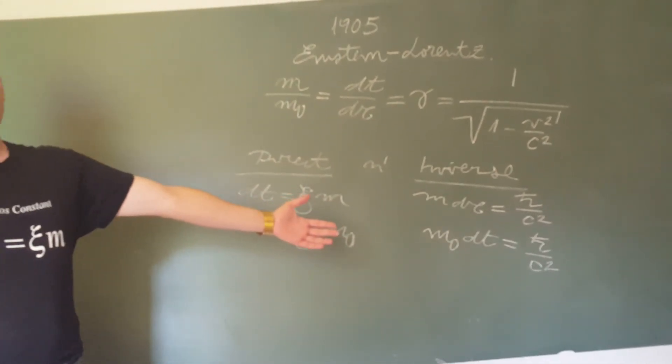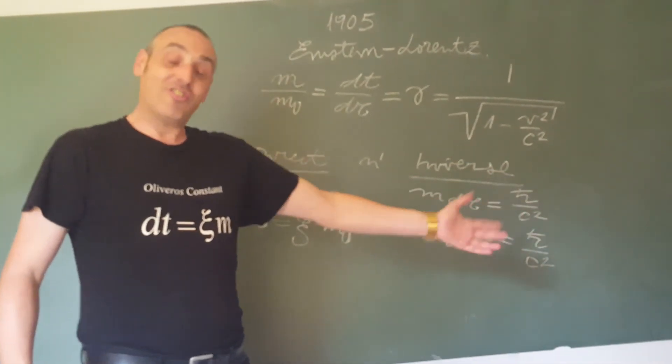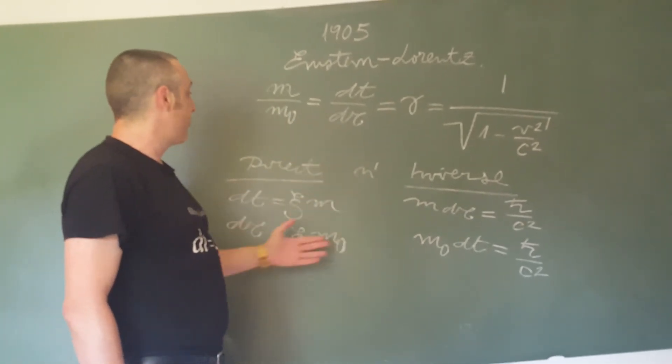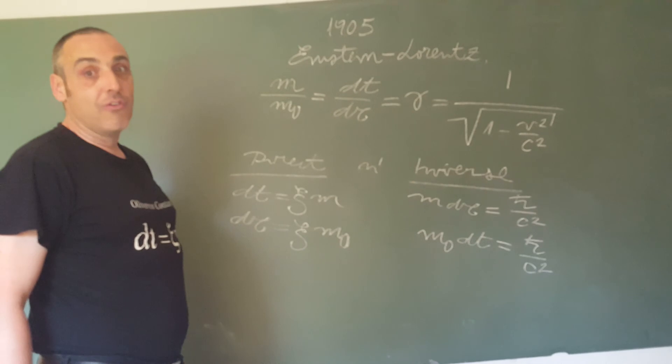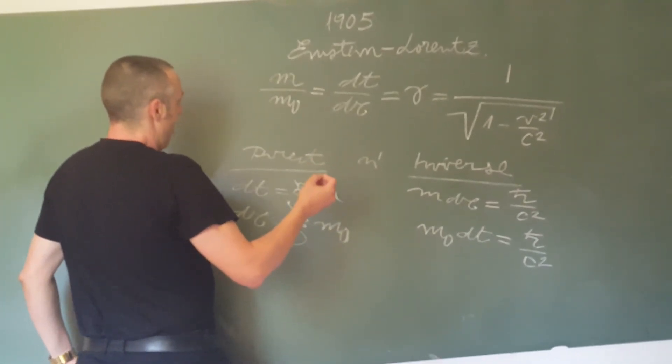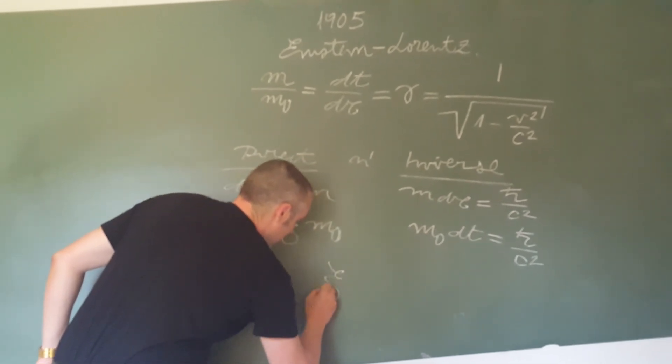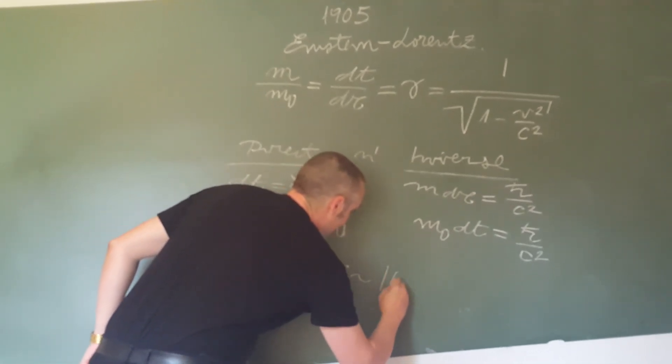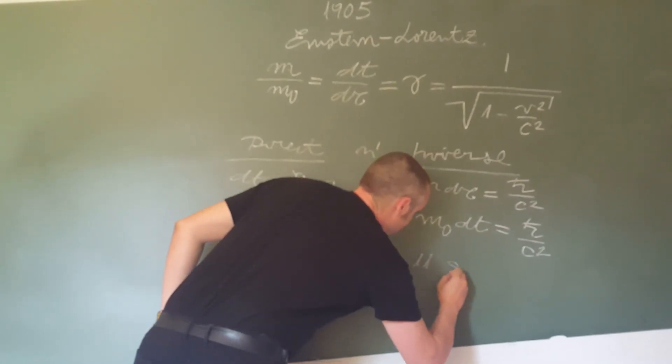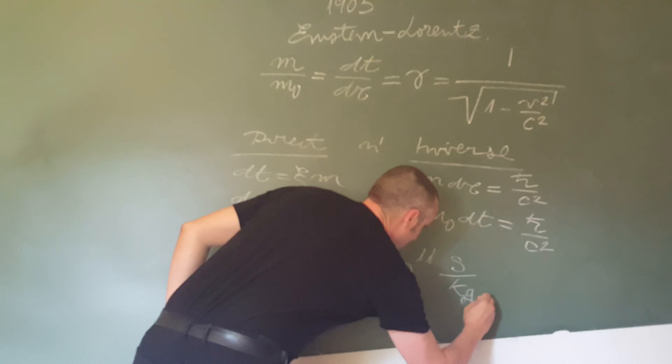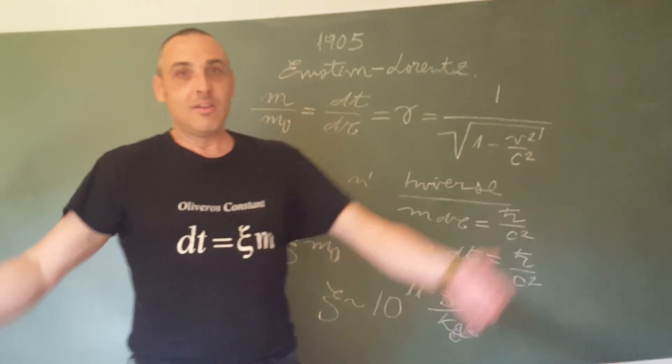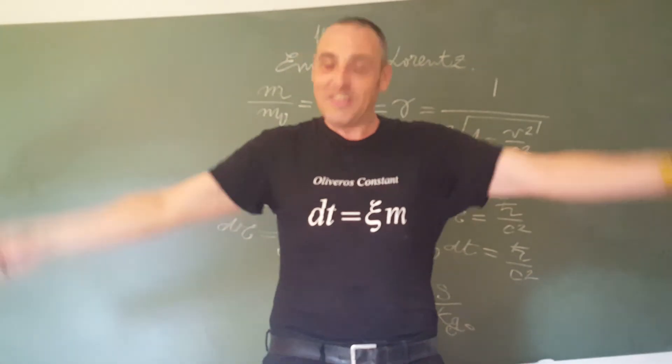This is my theory. And what is the Olivenoz constant? The value of the Olivenoz constant is around 10 to the 11 seconds per kilogram. This is all, my friends.